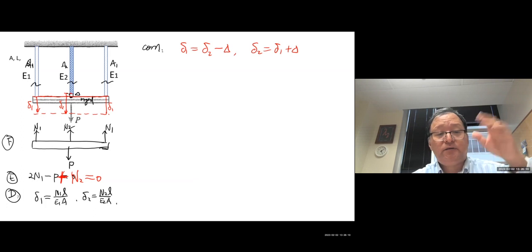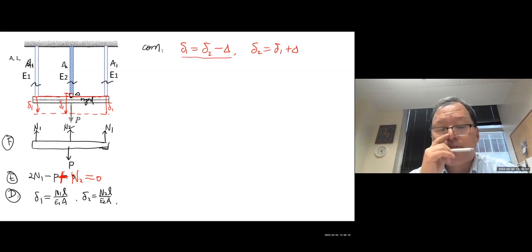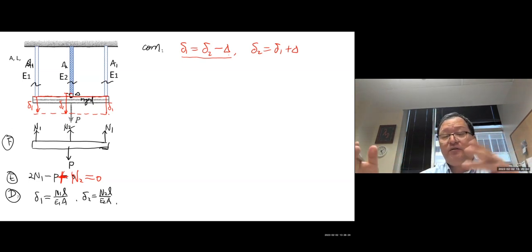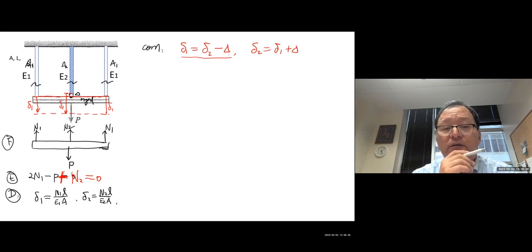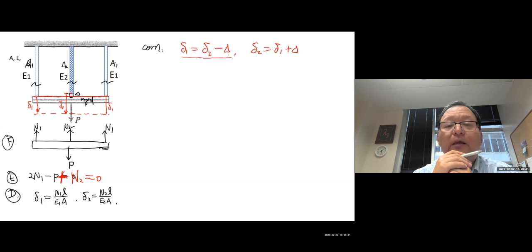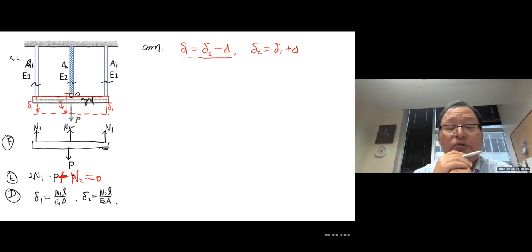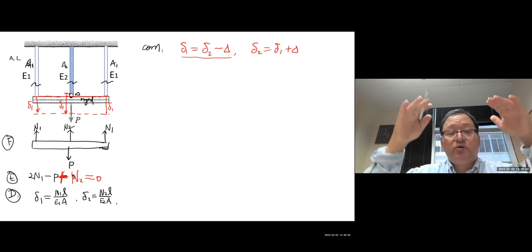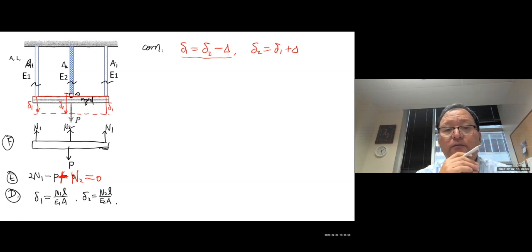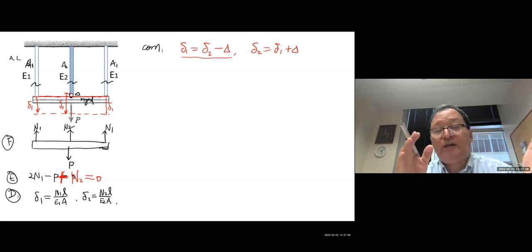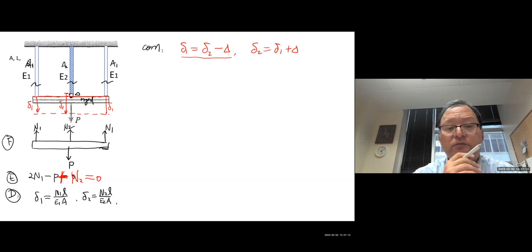Back to compatibility: the two sets of bars elongate differently because of the initial gap, giving us delta_2 = delta_1 + delta. Combine the equilibrium, deformation, and compatibility equations to solve for N1 and N2, and then find delta (how much the rigid beam moves down).